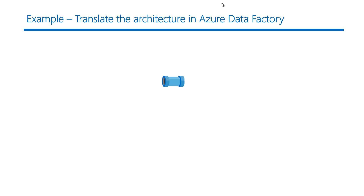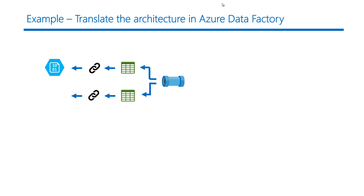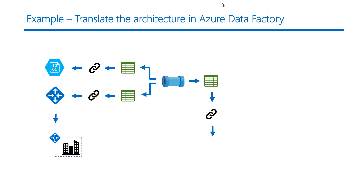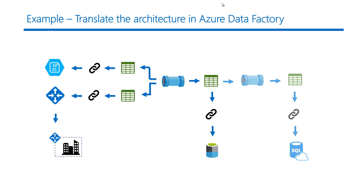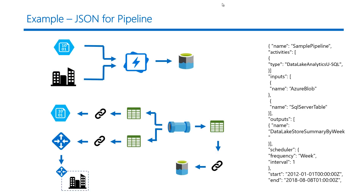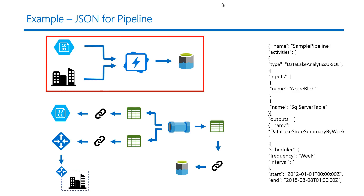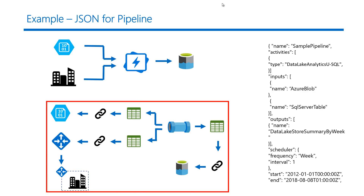Let us see how we can translate this architecture within Azure Data Factory. First, we consume data from blob storage, creating datasets that represent files within the blob store and linked services that connect to blob storage. At the same time, we consume data from the on-premise SQL Server, creating datasets that represent the table, plus linked services and a gateway required to pull data from the on-premise data store. Every week this activity runs, the summarized data is made available in the Data Lake Store, and another activity starts and copies the data from the Data Lake Store to SQL Azure.